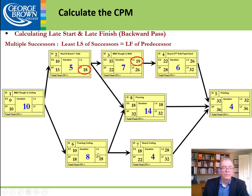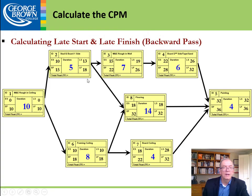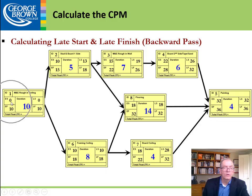Continuing: of the numbers 10 and 13, we take 10 — the smaller — as the late finish. Then 10 minus 10 equals zero. The final late start must equal zero; if it doesn't, you started with zero and something went wrong somewhere.